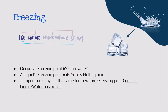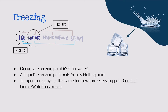Moving on to the fourth process — freezing. Freezing occurs at freezing point, which is 0 degrees Celsius for water, where liquid water is converted to solid ice. As mentioned earlier, a liquid's freezing point is equal to its solid's melting point, and this will be elaborated further in a graph. Like melting and boiling, temperature stays at the freezing point until all liquid has frozen.